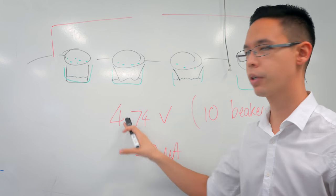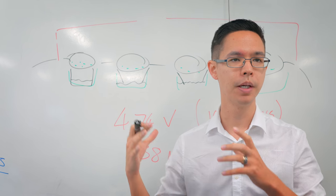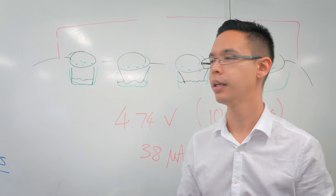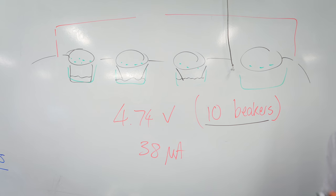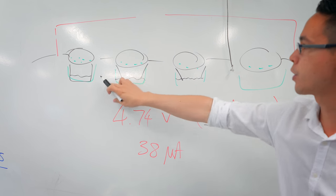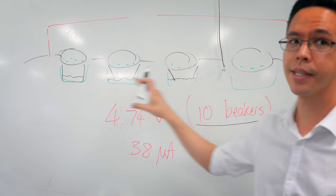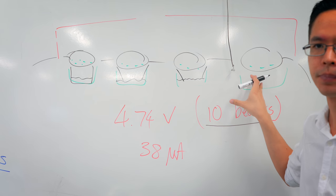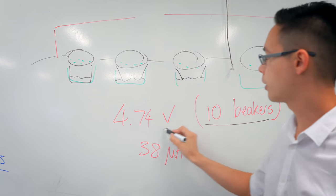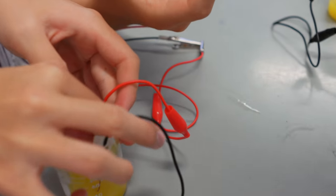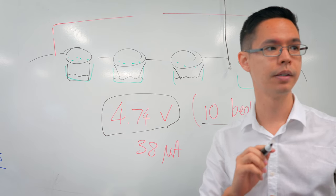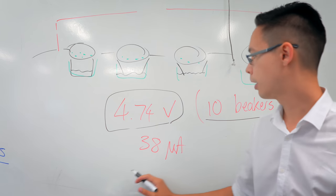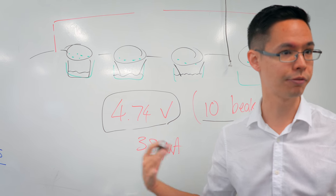But by looking at some of the measurements we've taken from the chains that we were able to make, the largest chain one team was able to make was 10 beakers in series. That means they're placed one after each other like this, which means that their voltages should stack together. And the best they could create with the resources we had to work with was just shy of five volts.